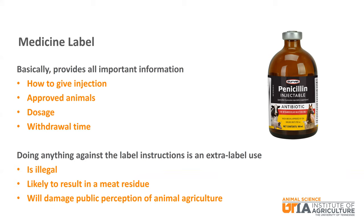Basically, the medicine label provides all of the details needed to properly administer medications to sheep as well as other species. The trade name is how you know most medications. For example, Safeguard is the trade name for fenbendazole. Chances are you have heard of Safeguard but have never heard of fenbendazole. The route of administration is how the medication should be given. For most injectable medications, this will be either subcutaneous or intramuscular injection. It is important to only give the medication how it says on the label. When given a choice, you should choose sub-Q whenever possible.